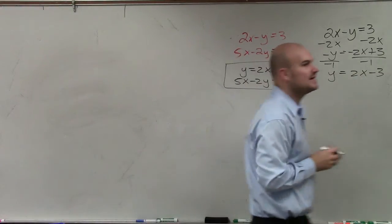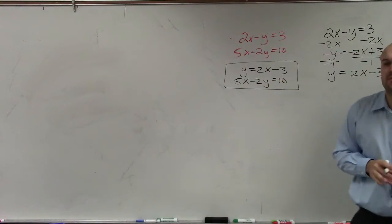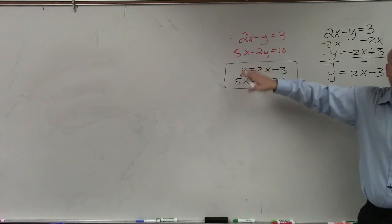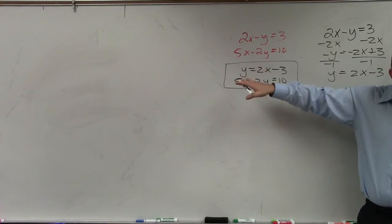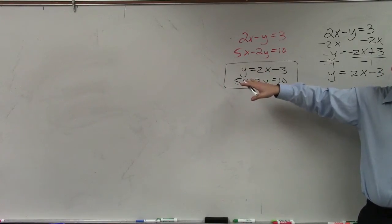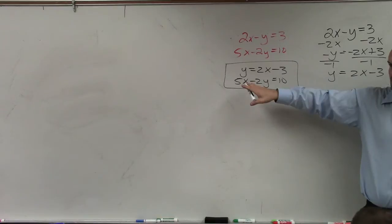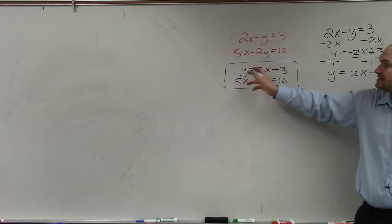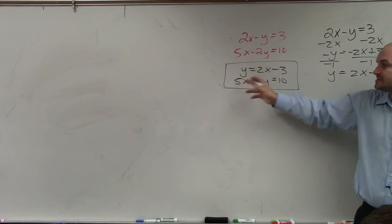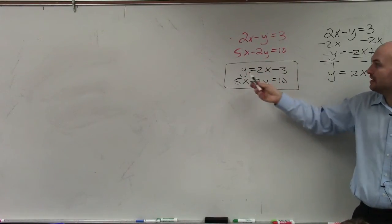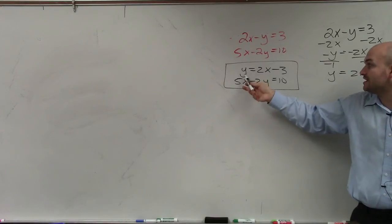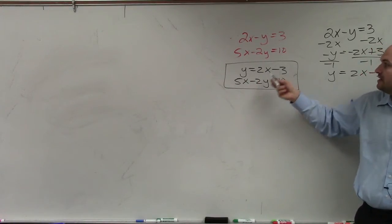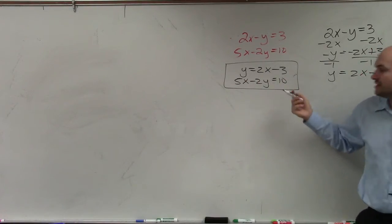So now let's rewrite my top equation as y equals 2x minus 3, and my next equation as 5x minus 2y equals 10. By rewriting that, I'm putting my problem in the format that we're familiar with. Now it's a little bit more obvious: what am I going to plug into the other equation? I'm going to take the value of y, which is 2x minus 3, and plug that in for y.